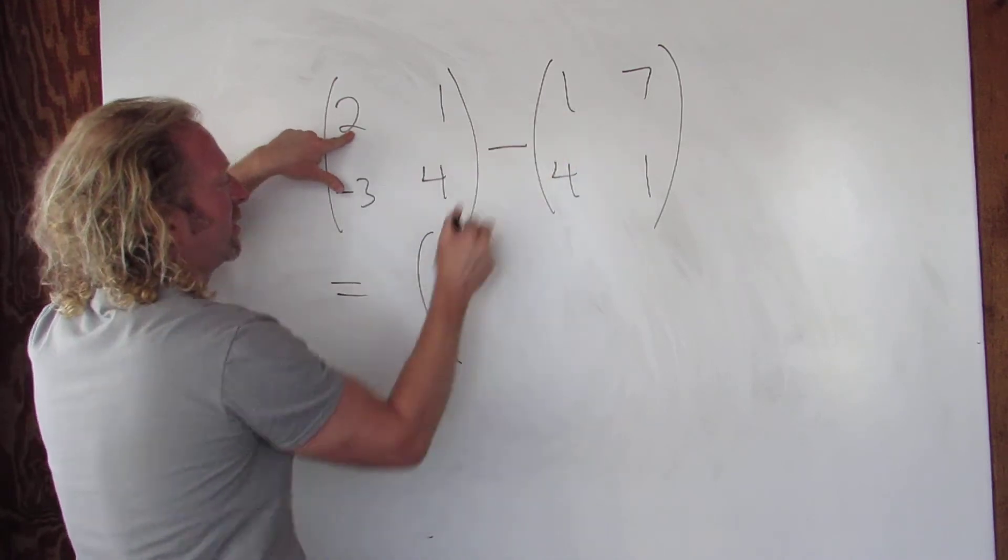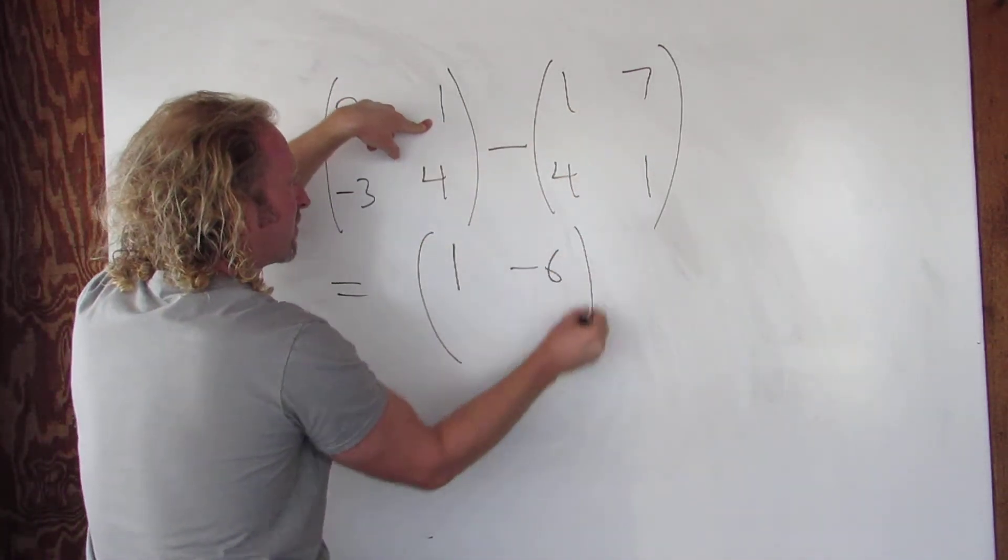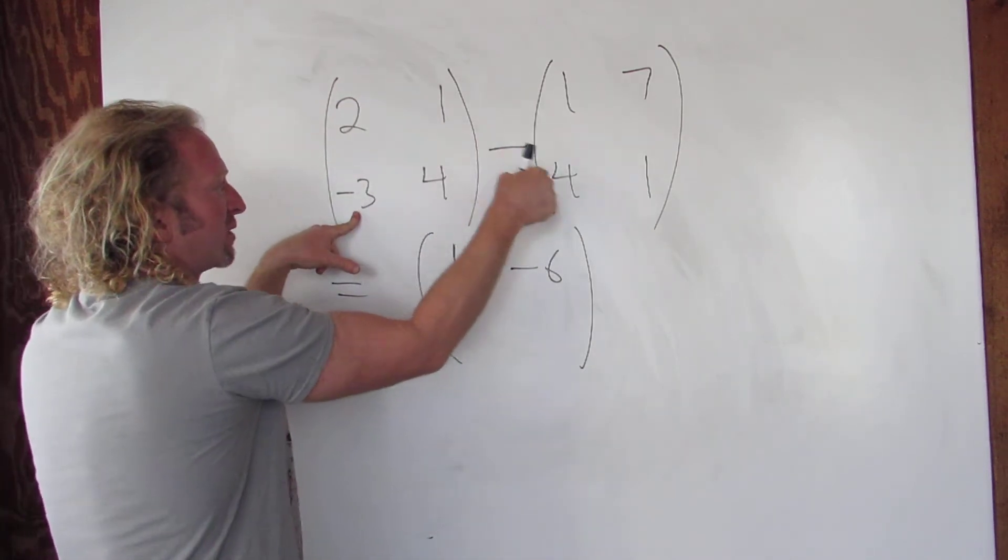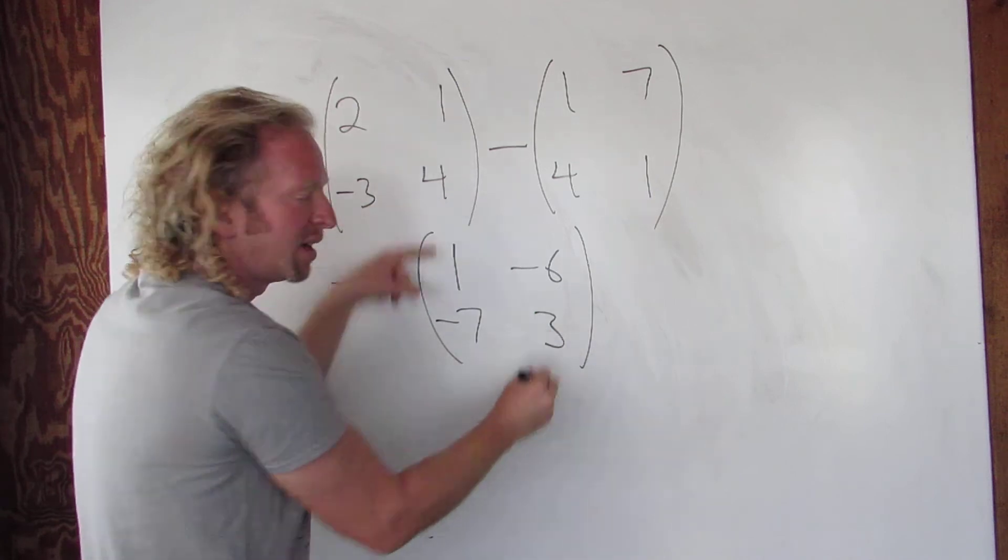2 minus 1 is 1. 1 minus 7 is minus 6. Negative 3 minus 4 is minus 7. 4 minus 1 is 3. That's it.